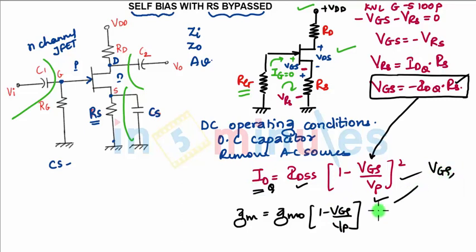Once you know IDQ, you can find VGS. Once you know VGS, you can find GM. This is how we need to do DC analysis for JFET. Now once we are done with the DC analysis, what we do, we draw the circuit under AC operating conditions.